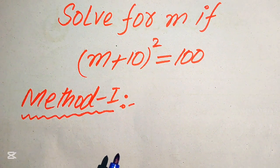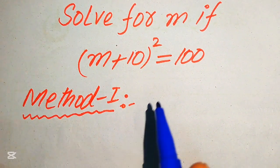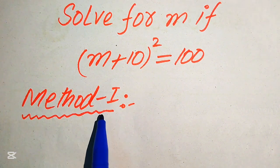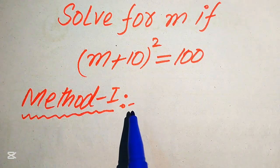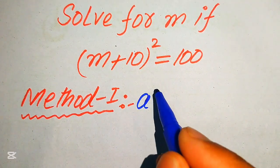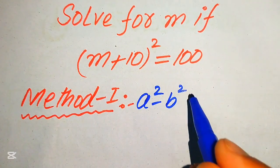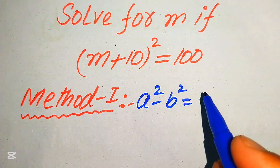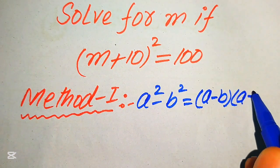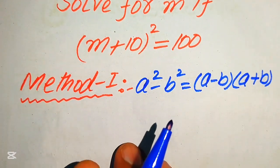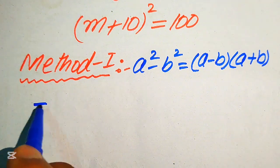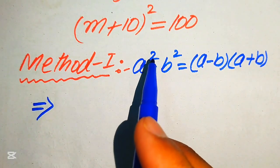Now, in the first method we apply the algebraic formula: a² - b² = (a - b)(a + b). Here we first solve this problem with the help of this formula. For this, we first need to rearrange the terms of the given equation.